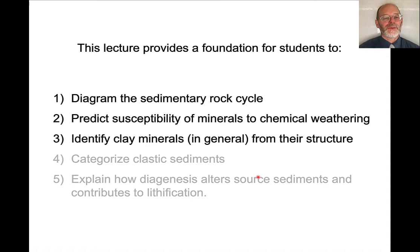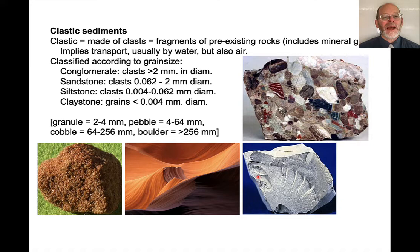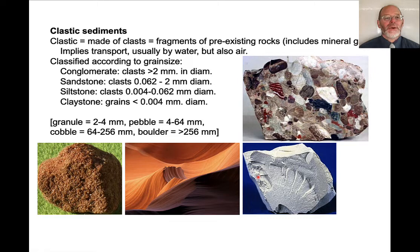How do we classify clastic sediments? First, let's define clastic: clastic means made of clasts. Clasts are fragments of pre-existing rock, which can include literally rock fragments but also typically mineral grains. This implies some sort of transport, which is usually by water but can also be by air to form sand dunes and so on.